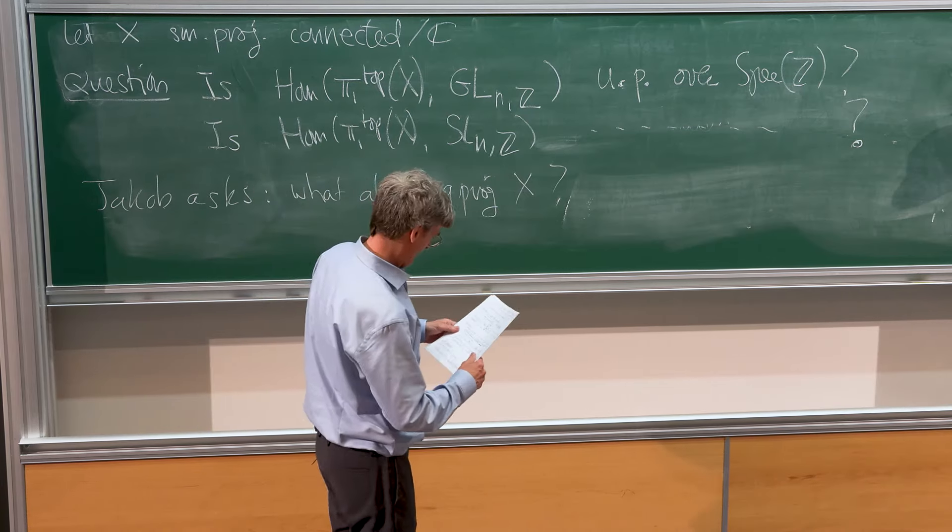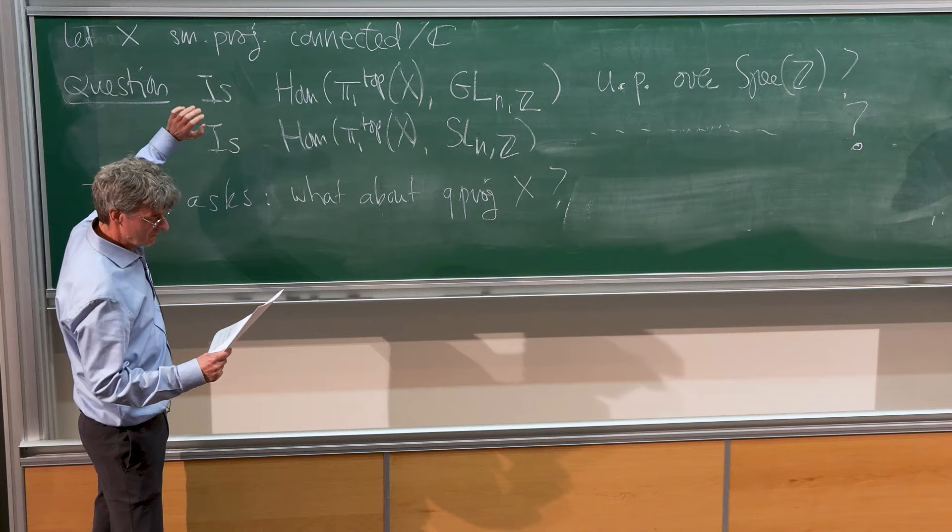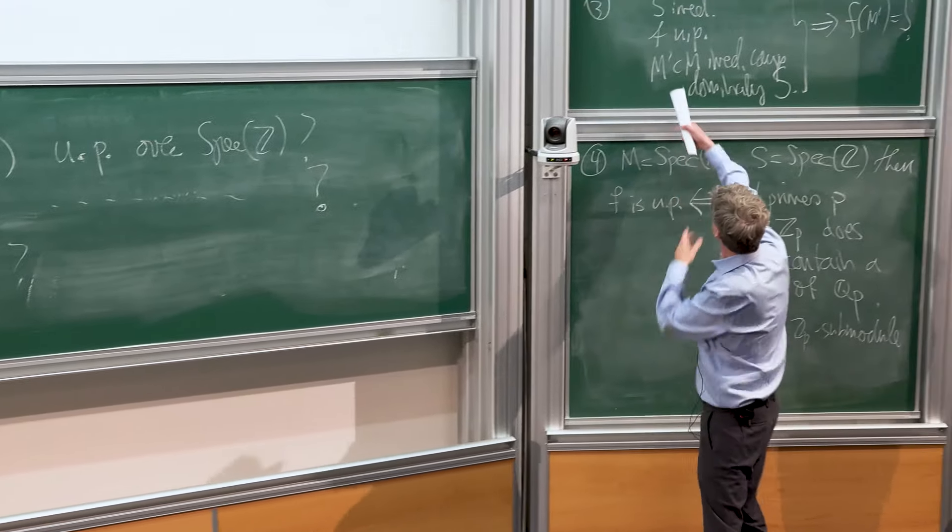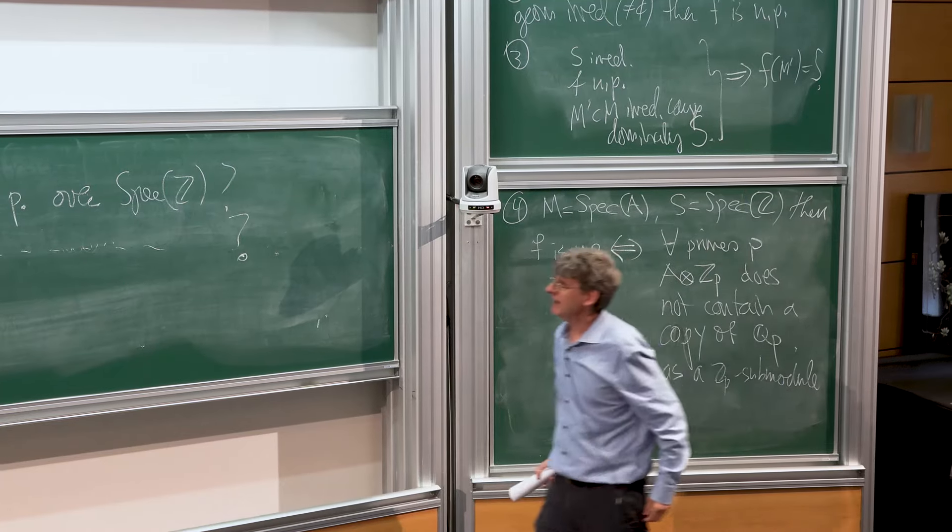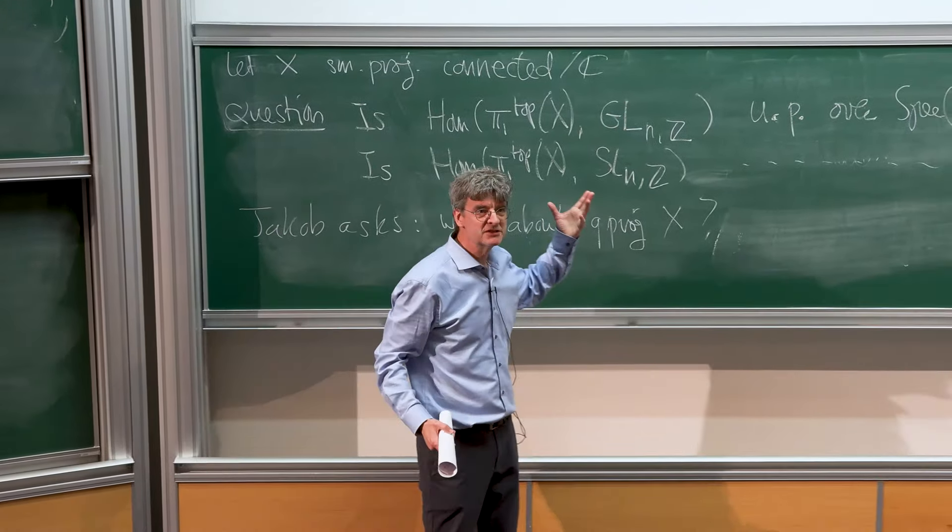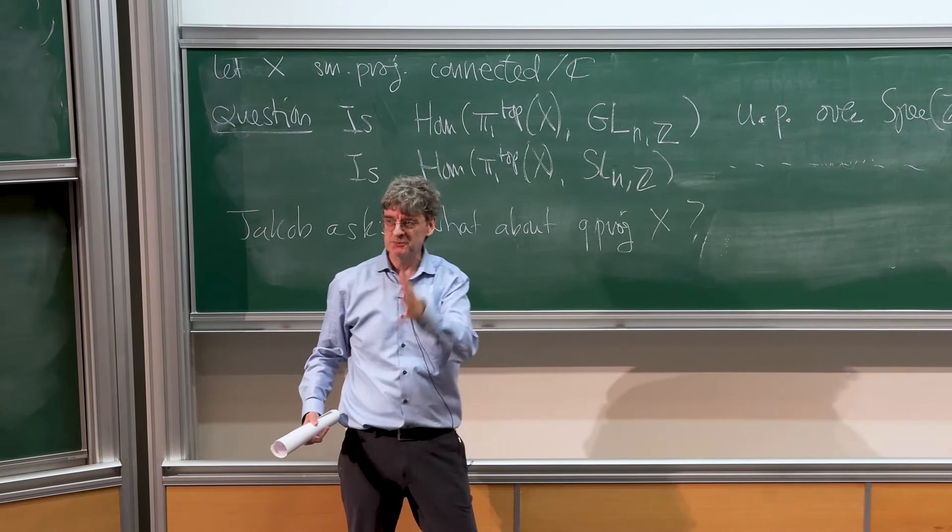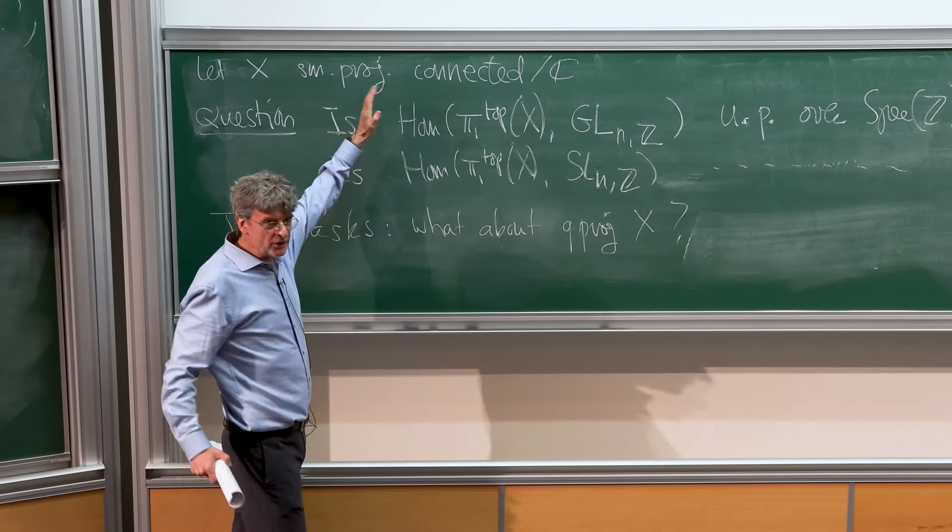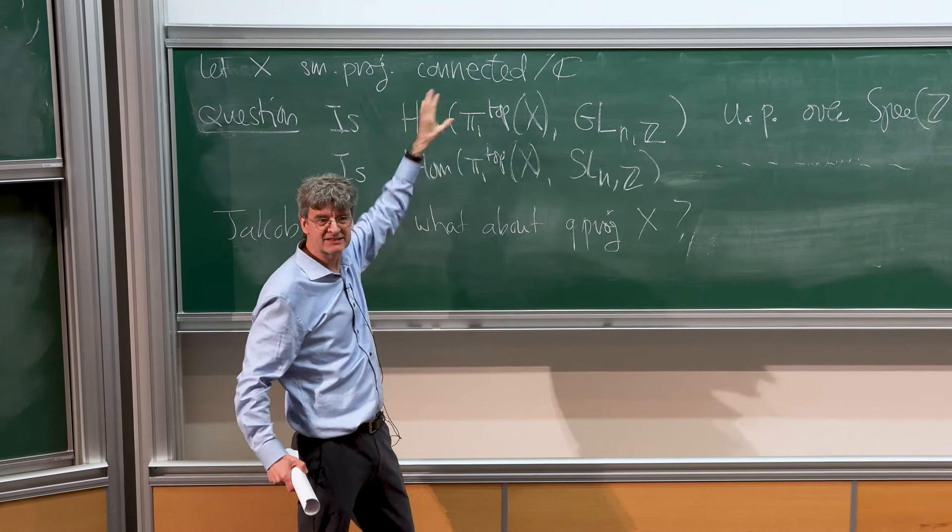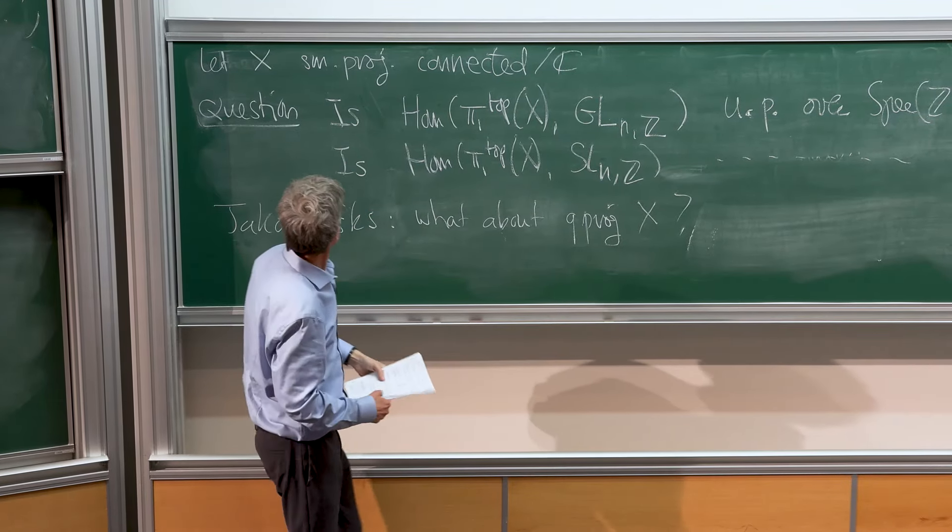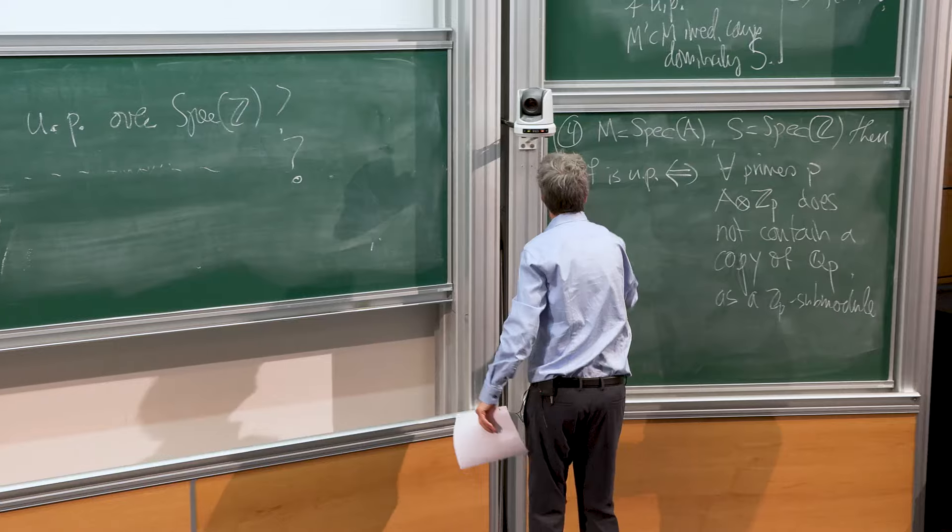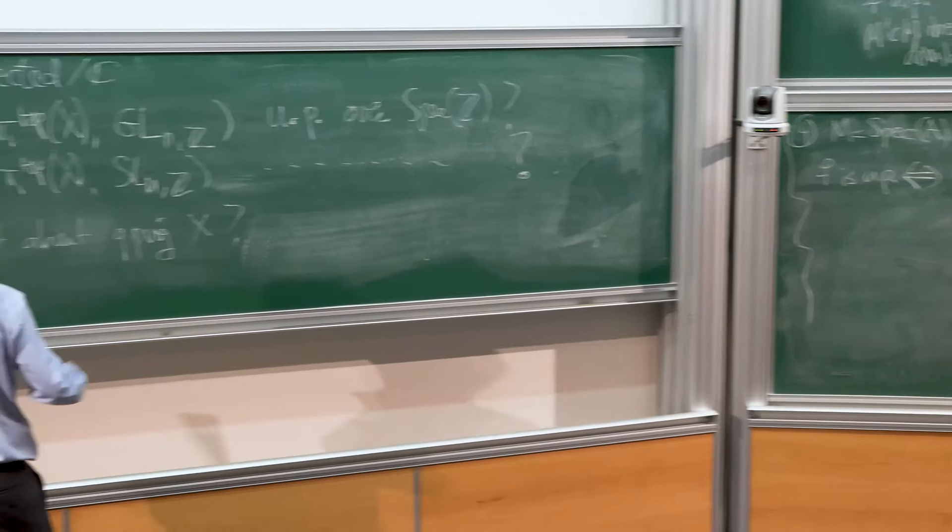Maybe a better question is this property three: if you have an irreducible component that dominates S, then you want the image to be everything. You could ask if you have an irreducible component which doesn't live in characteristic P, does it actually surject onto spec Z? Does it have non-empty fibers for all P?